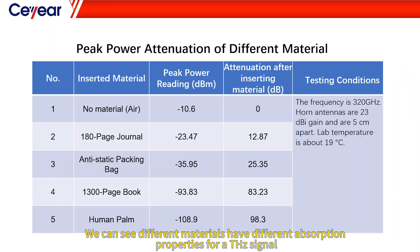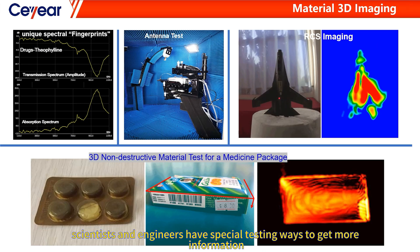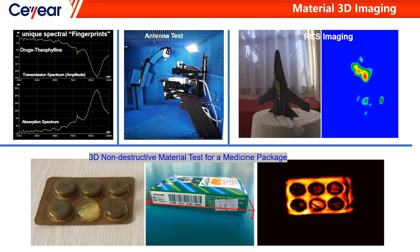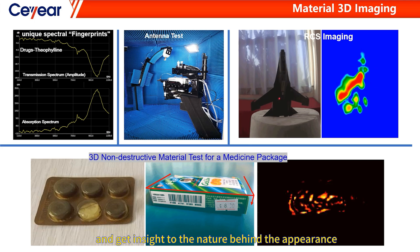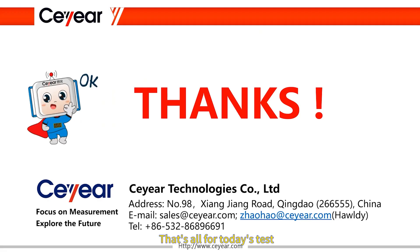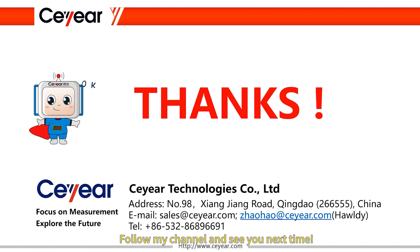We can see that different materials have different absorption properties for a Terahertz signal. Scientists and engineers have special testing methods to get more information and gain insight into the nature behind the appearance. That's all for today's test. Thanks for watching — follow my channel and see you next time. Bye!